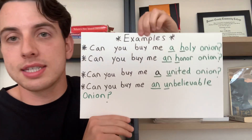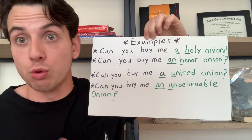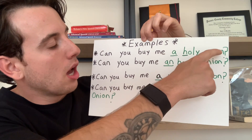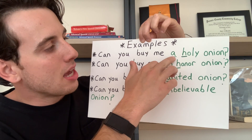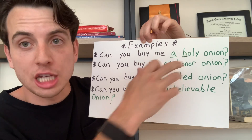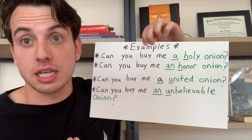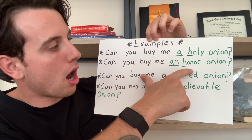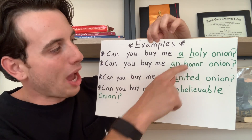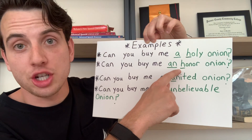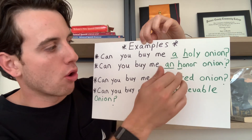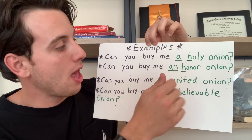This last group of examples are a bit silly, but they illustrate the rules in practice. Can you buy me a holy onion? The reason we use 'a' is because the adjective 'holy' is pronounced with the H, so that's considered a consonant. Next example: can you buy me an honor onion? Two adjectives that both begin with H, but the pronunciation is completely different. 'Holy' vs. 'honor' — I'm not pronouncing the H in 'honor,' so we consider it a vowel and use 'an.'